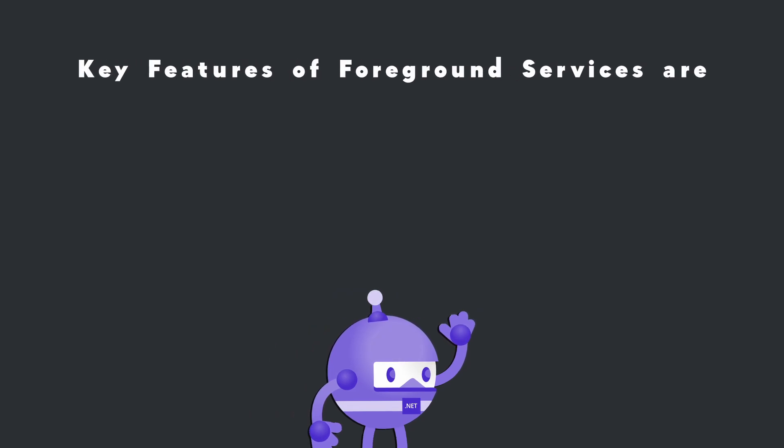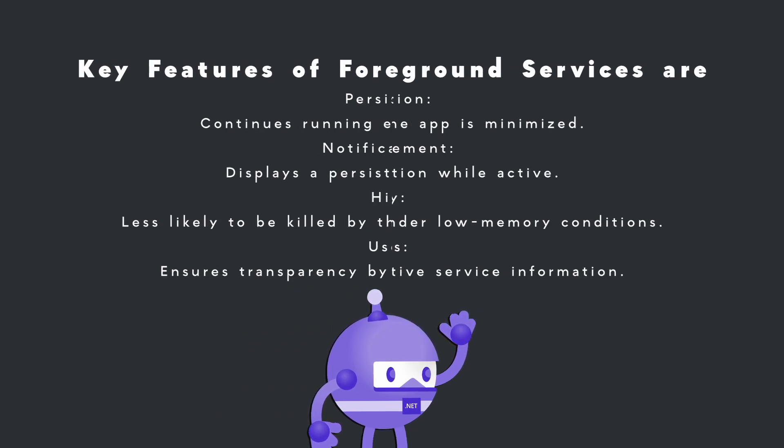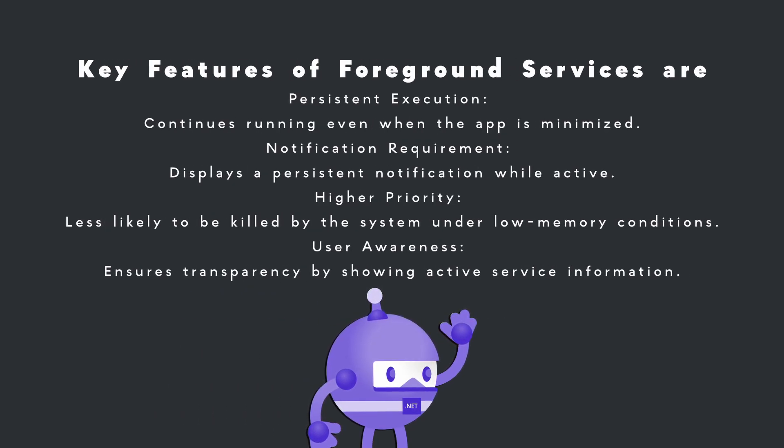Key features of foreground services are: persistent execution — continuous running even when the app is minimized; notification requirements — displays a persistent notification while active; higher priority — less likely to be killed by the system under low memory conditions; and user awareness — ensures transparency by showing active service information.